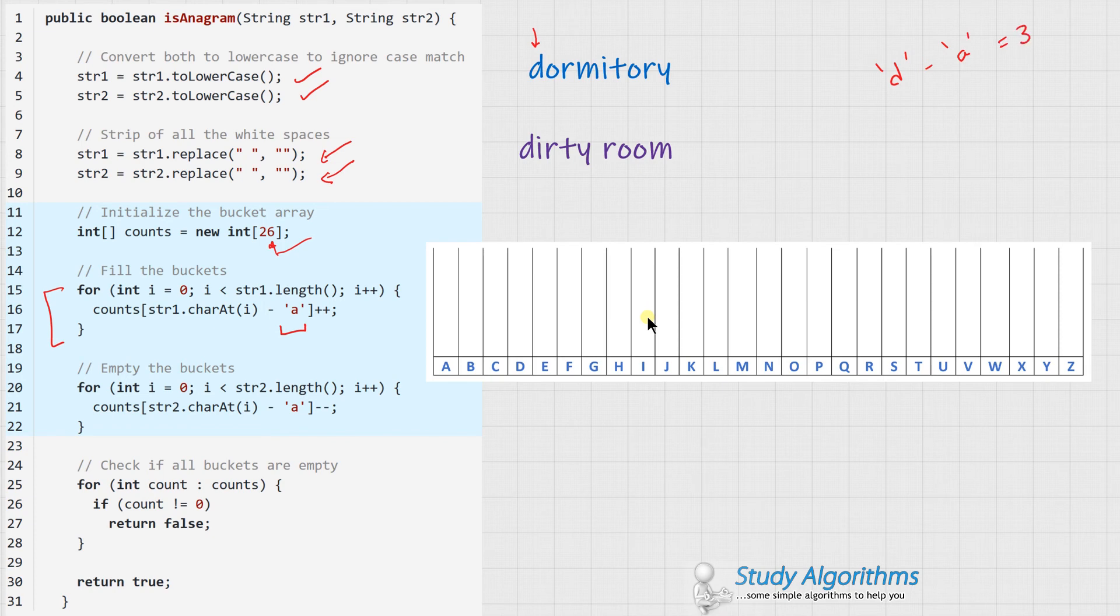So we start filling in the buckets. For character d, I add the value plus 1, then for o I get plus 1, then r I get plus 1, m plus 1, and so on. Moving forward, the next step would be to empty the buckets. To empty the buckets, I would be looking at my second string. Now this second string, we follow the same procedure again to get the ASCII value and hence the index. So we would be starting again by d and hence minus 1, i minus 1, r minus 1, and so on.